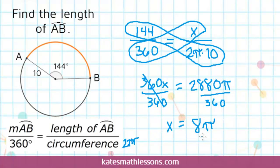So if you want an exact answer, the length of this arc is 8π. If you want a rounded answer, you can do 8 times the pi button on your calculator. And it comes out to about 25.13. So the distance from A to B is about 25.13.